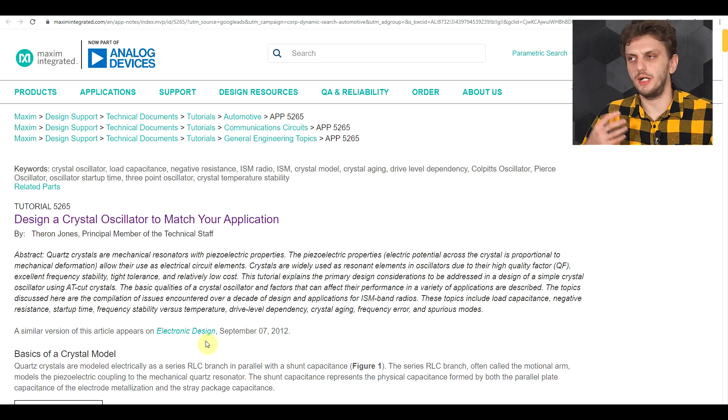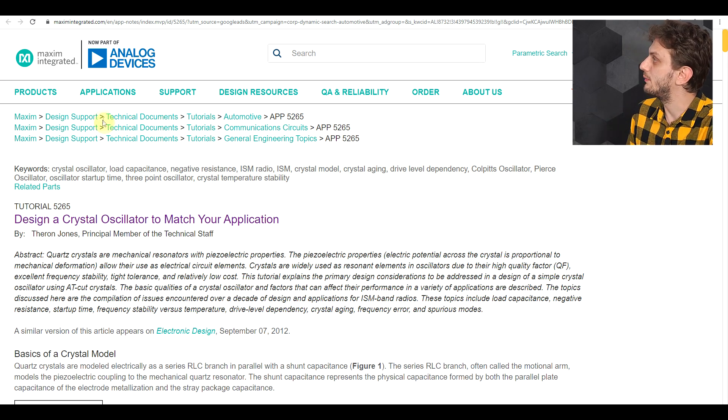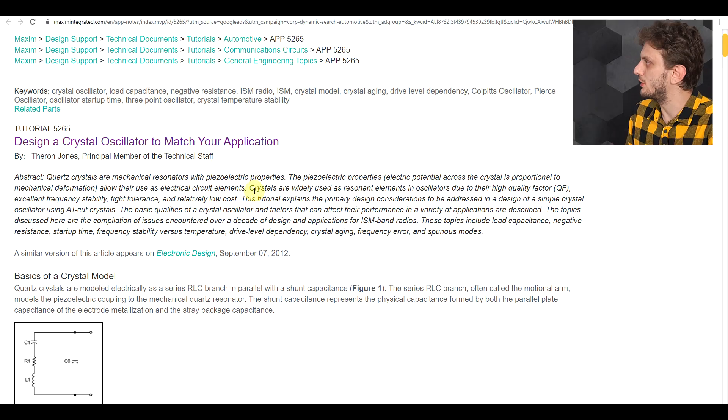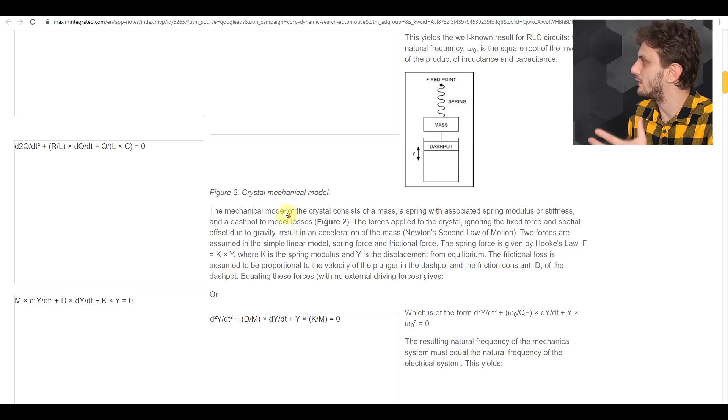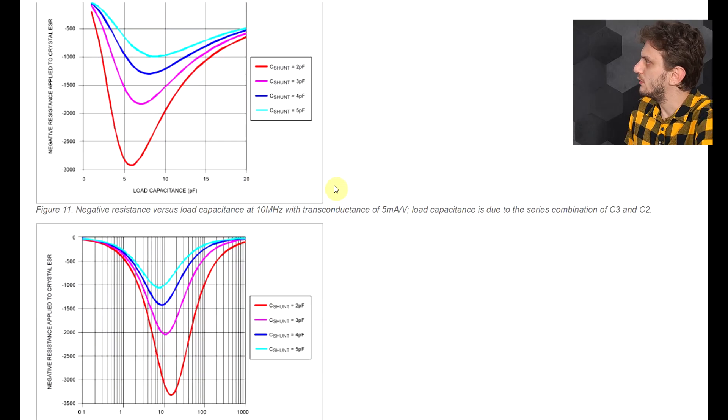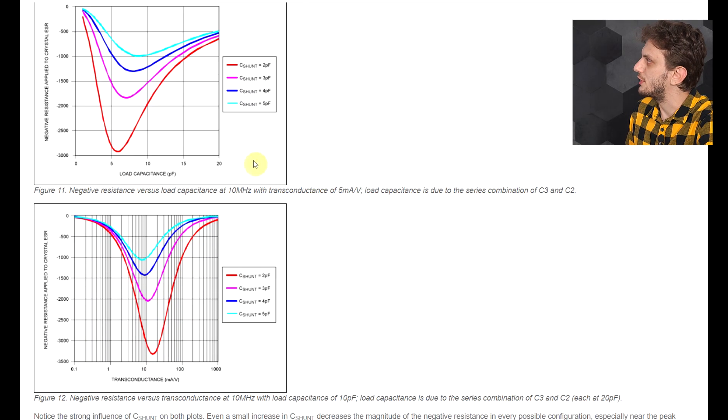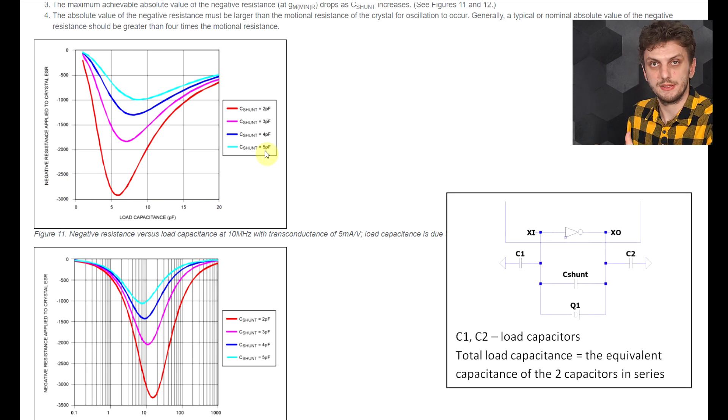Now to get a better feeling of how these values will impact the negative resistance of your system, I found this really nice article on the Maxim website. It's about designing crystal oscillators and it covers the basic model and the mathematics behind everything. And we come to these two very nice graphs here. So the first graph illustrates how your negative resistance will vary for a fixed gain based on the load capacitance and on the shunt capacitance. So the higher the shunt capacitance is, the lower your maximum achievable negative resistance is. And the load capacitance, you have a certain peak at some value, and before and after that, the negative resistance will go lower.